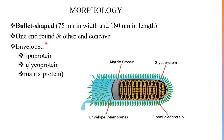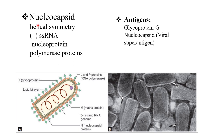One end of this virus is round and the other end is concave — you can see it is bullet-shaped. It has a lipid envelope in which 10-nanometer-long spikes with glycoprotein G are embedded. The envelope is lined internally by a layer of matrix protein. Talking about the nucleocapsid, it is helical in symmetry.